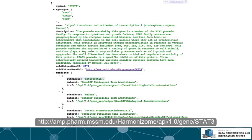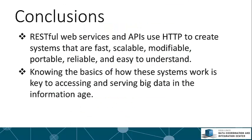So that's the Harmonizome API. In conclusion, RESTful applications and APIs use HTTP to create powerful systems that are fast, scalable, modifiable, portable, reliable, and easy to understand. Knowing how these systems work is key to accessing and serving big data in the information age. Now that you know about the Harmonizome API, you could write a Python script to programmatically make GET requests, download the data, and analyze it yourself. Data is moving to the cloud, and knowing how to access and serve it is critical to all kinds of research.